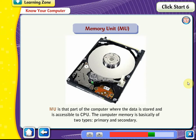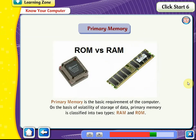Computer memory is basically of two types: primary and secondary. Primary memory is the basic requirement of the computer. On the basis of volatility of data storage, primary memory is classified into two types: RAM and ROM.